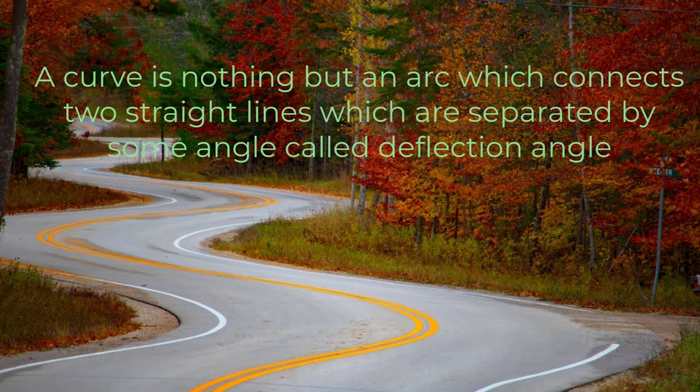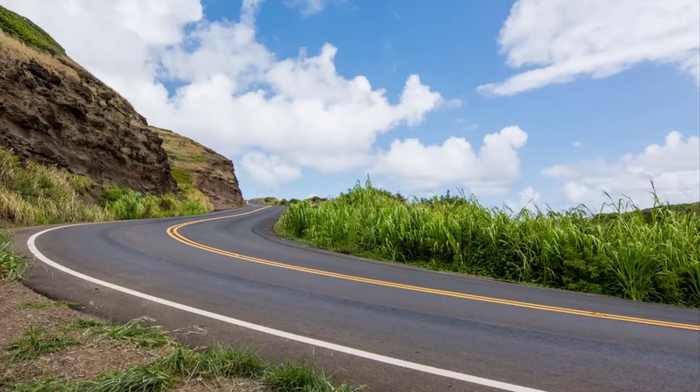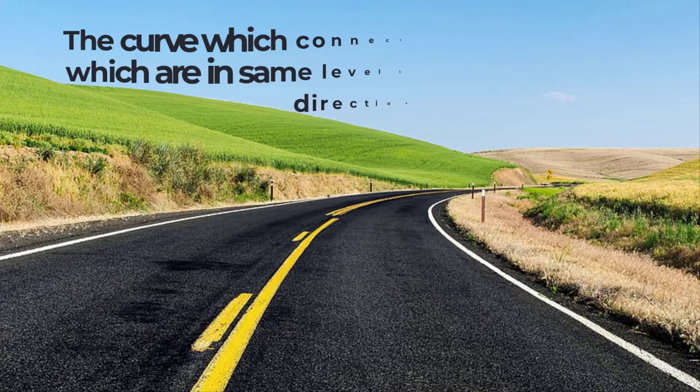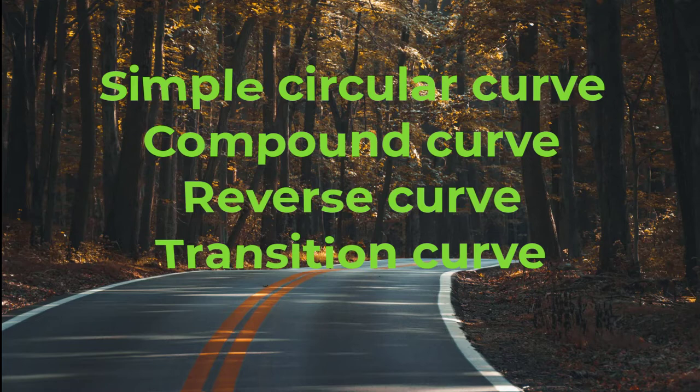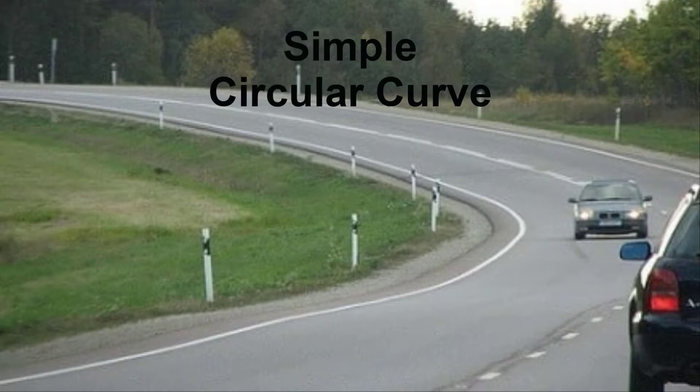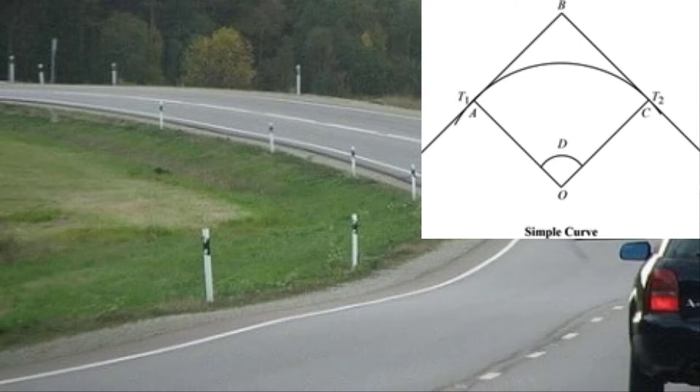A curve is nothing but an arc which connects two straight lines which are separated by some angle called deflection angle. There are two types of curves: horizontal curve and vertical curve. A horizontal curve connects two straight lines which are in the same level but having different directions. Horizontal curves are of different types: simple circular curve, compound curve, reverse curve, and transition curve. A simple circular curve is a normal horizontal curve which connects two straight lines with constant radius.